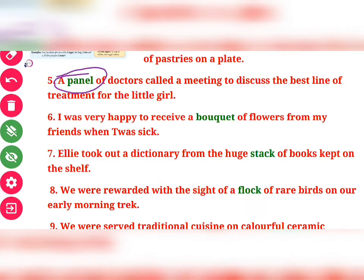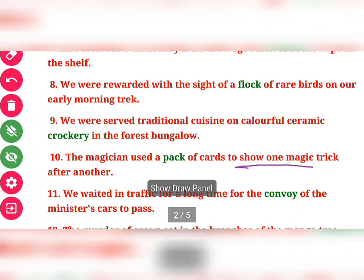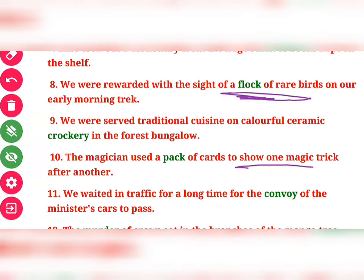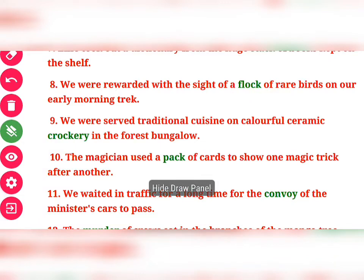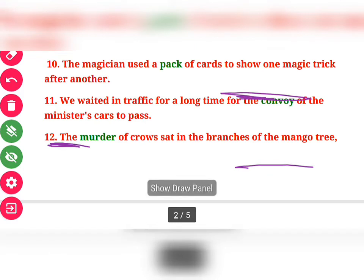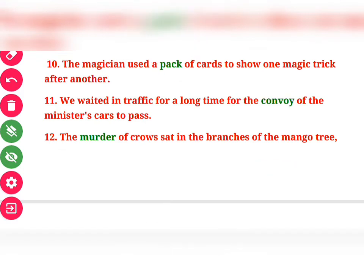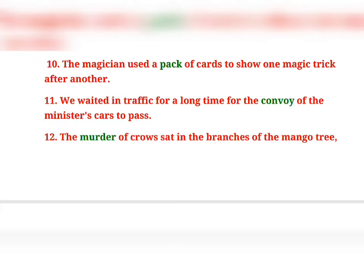Fifth: "A panel of doctors called a meeting to discuss the best line of treatment for the little girl" — 'panel' is a collective noun. Seventh: "Elie took out a dictionary from the huge stack of books kept on the shelf." Eighth: "We were rewarded with the sight of a flock of rare birds on our early morning trek." Ninth: "We were served traditional cushions on colorful ceramic crockery in the forest bungalow." Tenth: "The magician used a pack of cards." Eleventh: "We waited in traffic for a long time for the convoy of ministers' cars." Last: "The murder of crows sat in the branches of the mango tree."